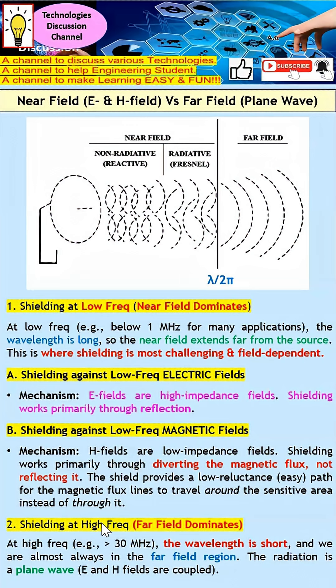As for high frequency, this boundary will be closer to the source. Hence, it is mainly dominated by far field. For far field, the shielding will be easier.